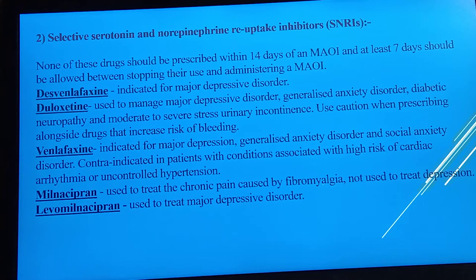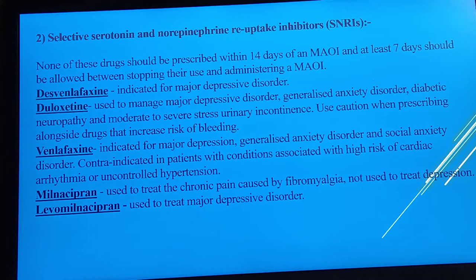Duloxetine is used for depressive disorder, generalized anxiety, and diabetic neuropathy. For patients having enuresis (urinary incontinence), duloxetine can be given. Venlafaxine is used for depression, generalized anxiety disorder, and social anxiety disorder; contraindications include cardiac arrhythmias and uncontrolled hypertension. Milnacipran is used to treat chronic pain and depression. Levomilnacipran is used to treat depressive disorders.